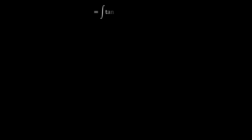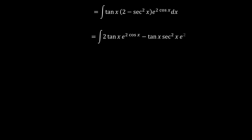Continuing further, when we multiply tangent(x) across and also e to the power 2cos(x), we now have 2tan(x) times e to the power 2cos(x), minus tan(x) times sec²(x) times e to the power 2cos(x).